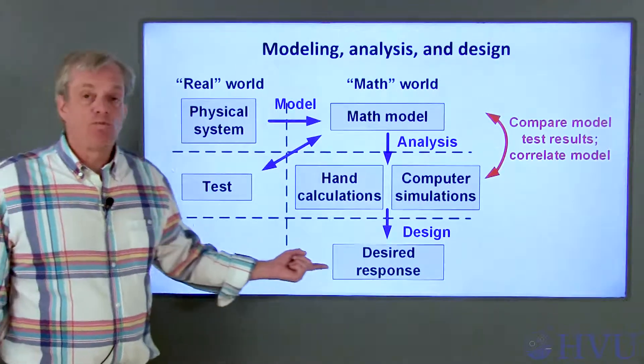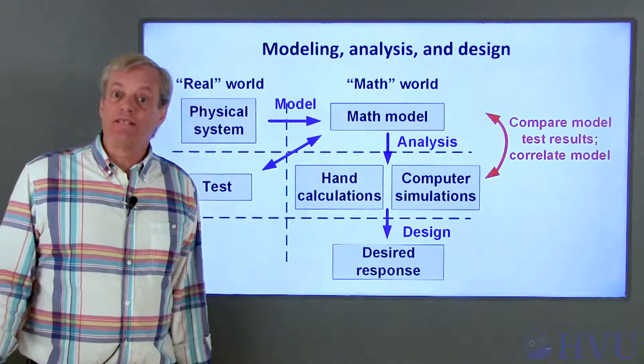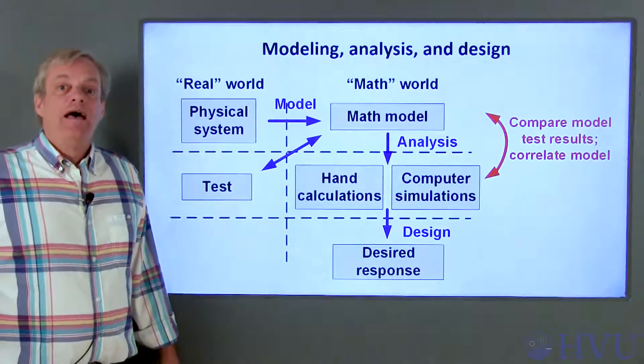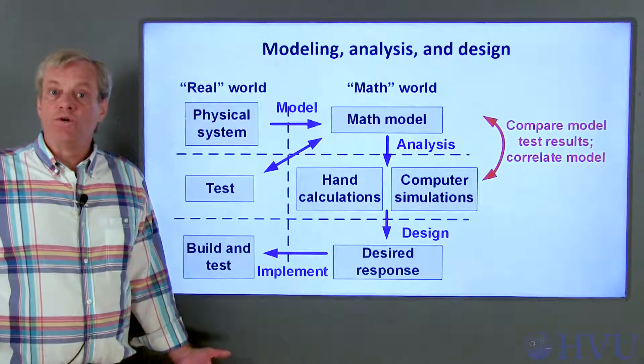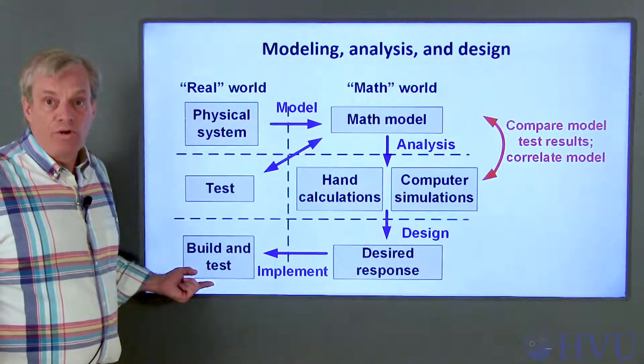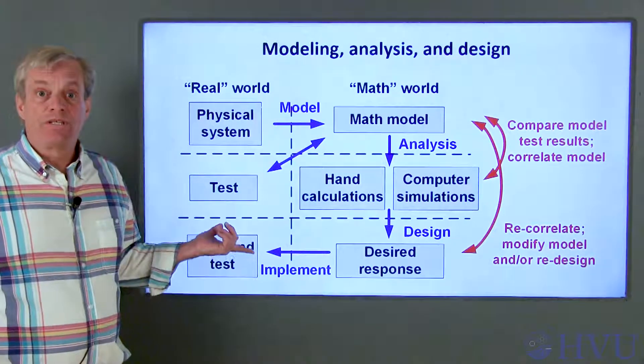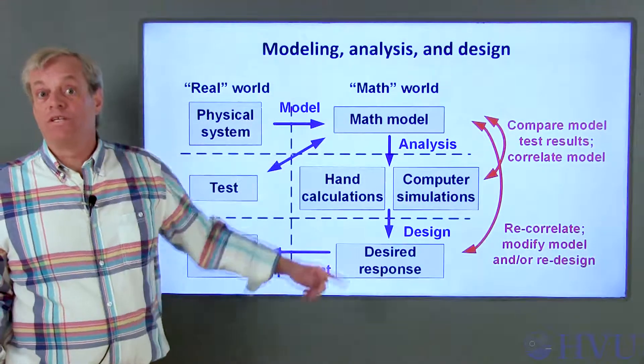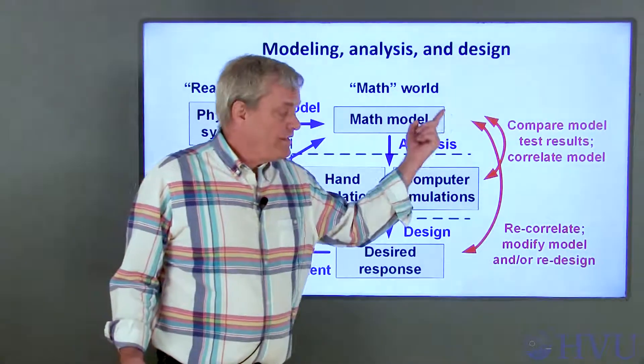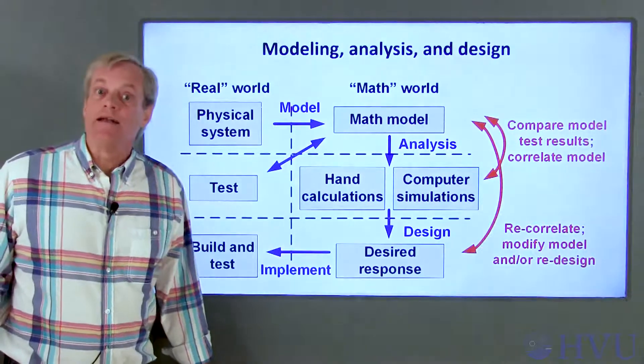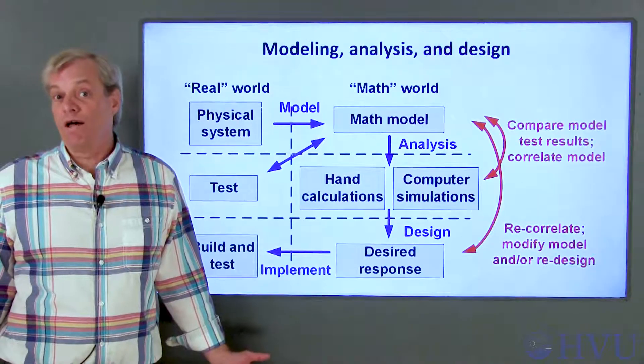In this step, we know what kind of response we want from the system. We can now use our math model to evaluate what to change about the system to get that desired response. At this point, we've got a new design that, on paper at least, does what it's supposed to do. The next step is to implement the design in the real world and test that design. Generally, this step will show us that we left something out of the original math model or didn't model our design changes correctly. We'll use this test data to recorrelate the model and make additional changes to the design. This process of modifying the design and testing the changes continues until the thing works the way we want it to.